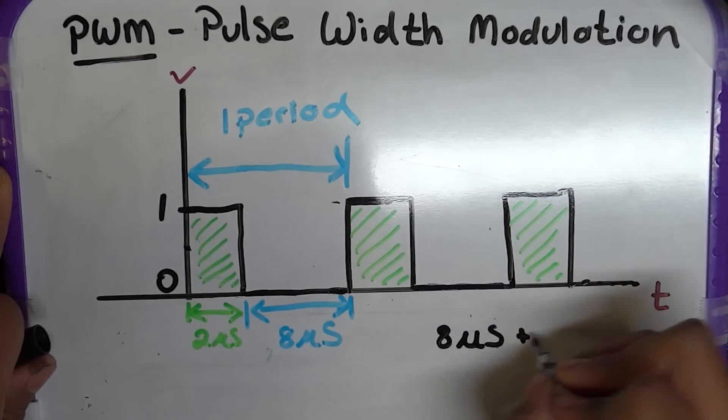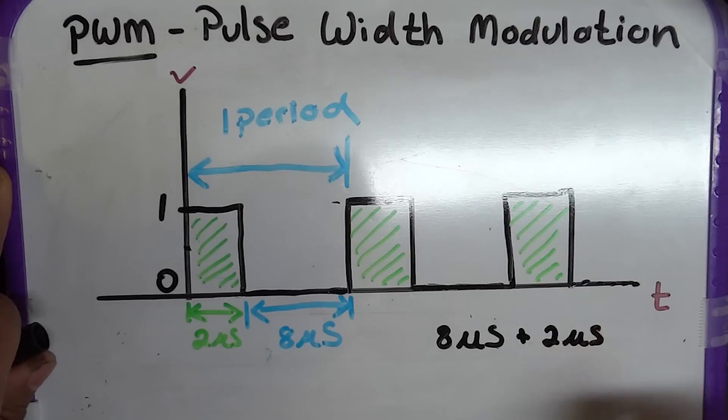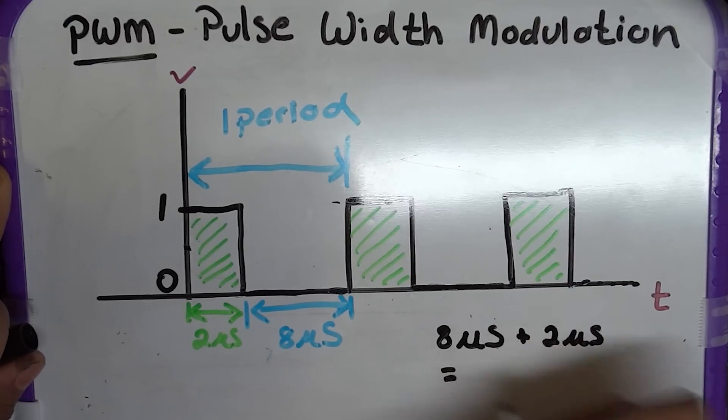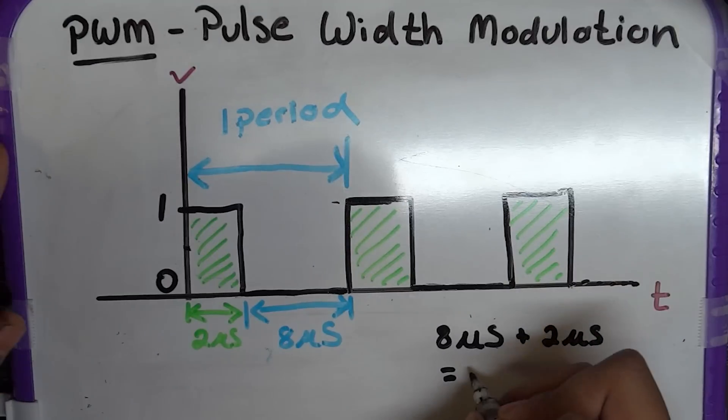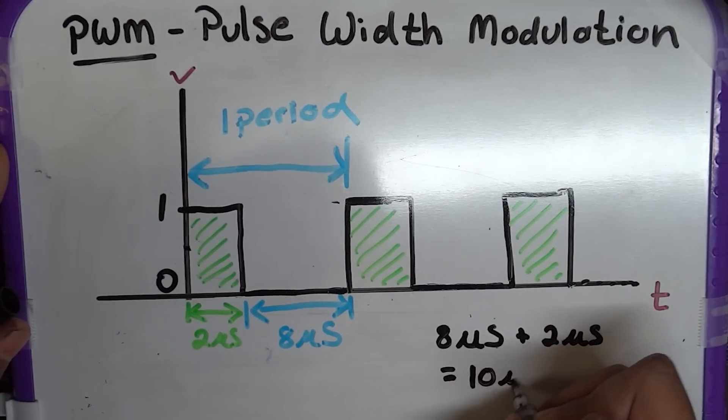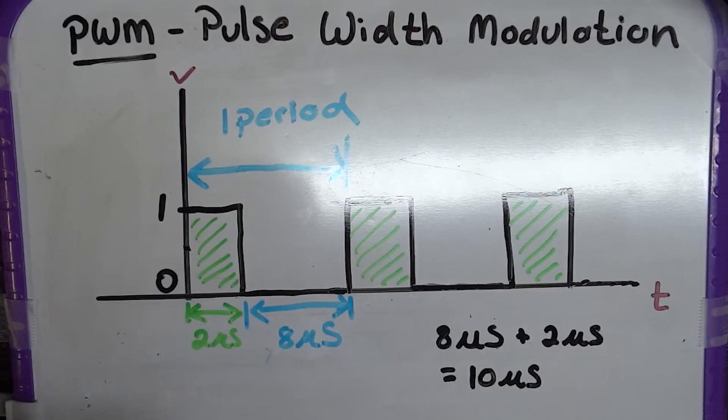And the other one is 2 microseconds. Now, what this is equal to is, quite obviously, 10 microseconds. Right? So that is one period. One period is 10 microseconds.